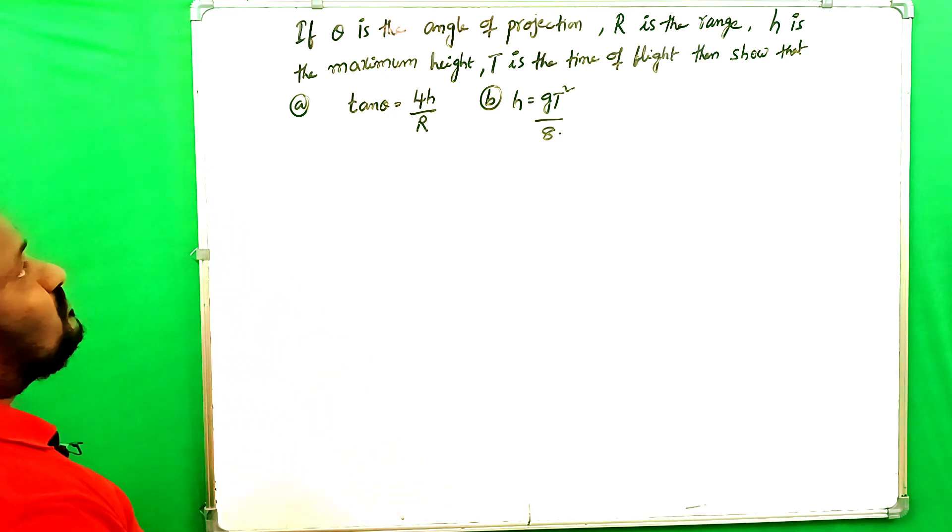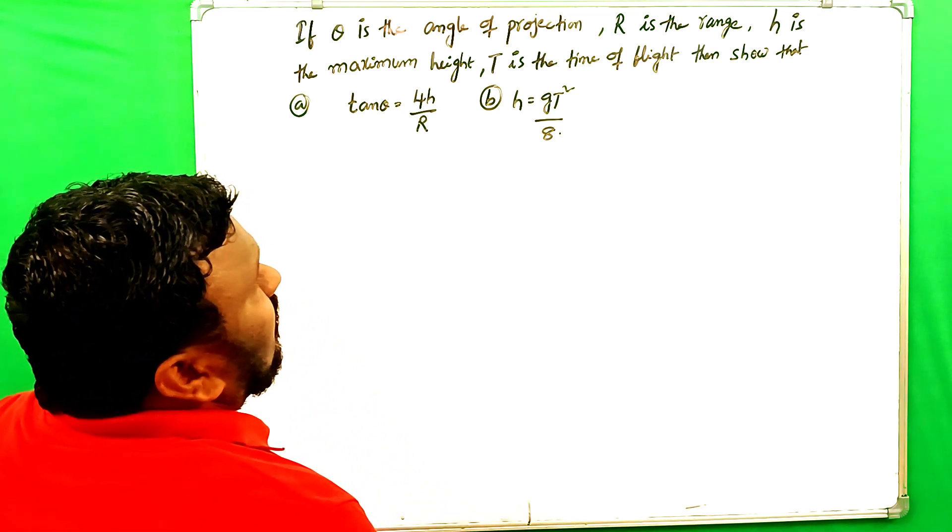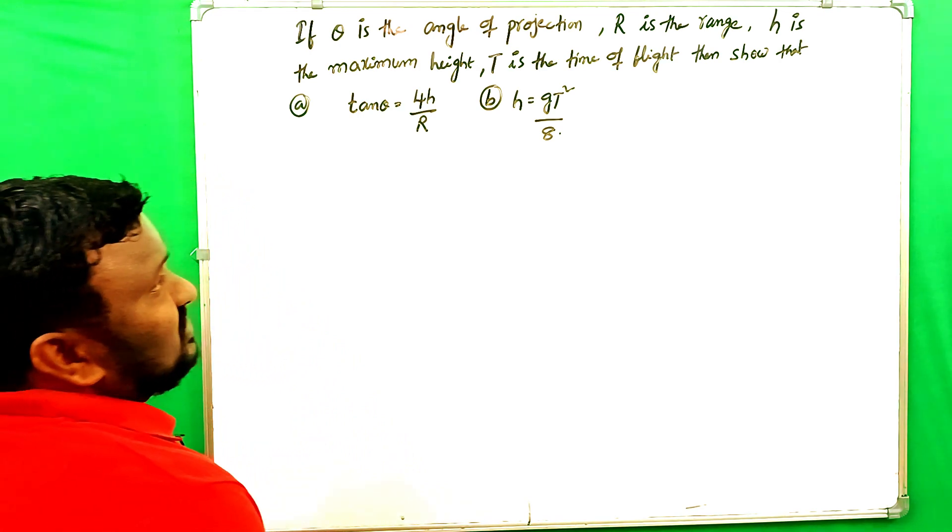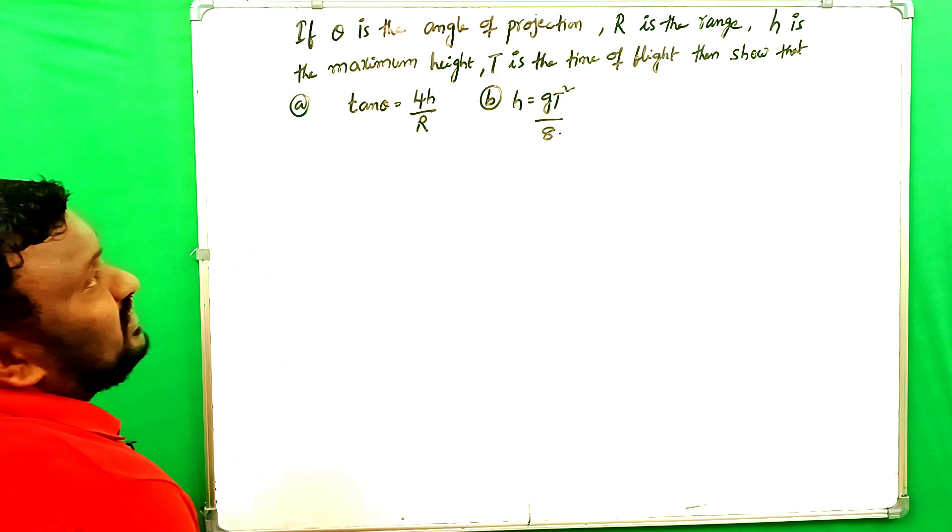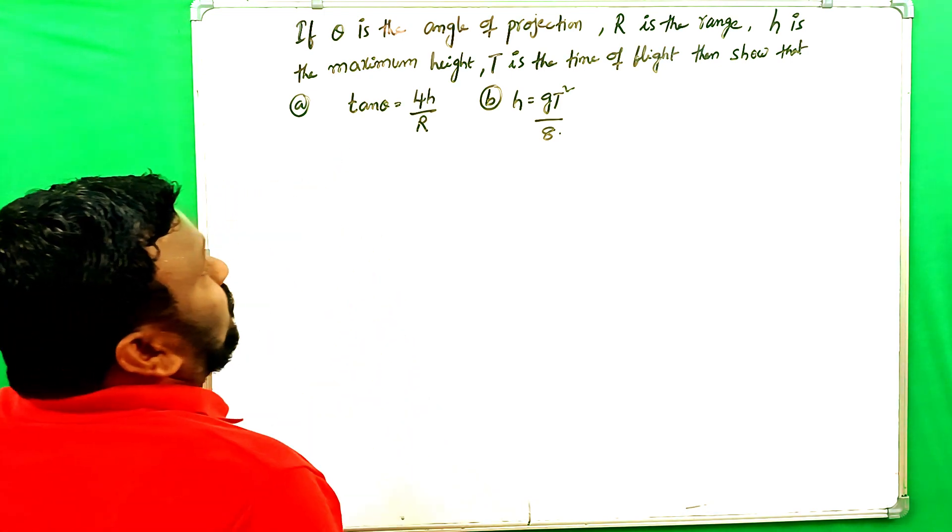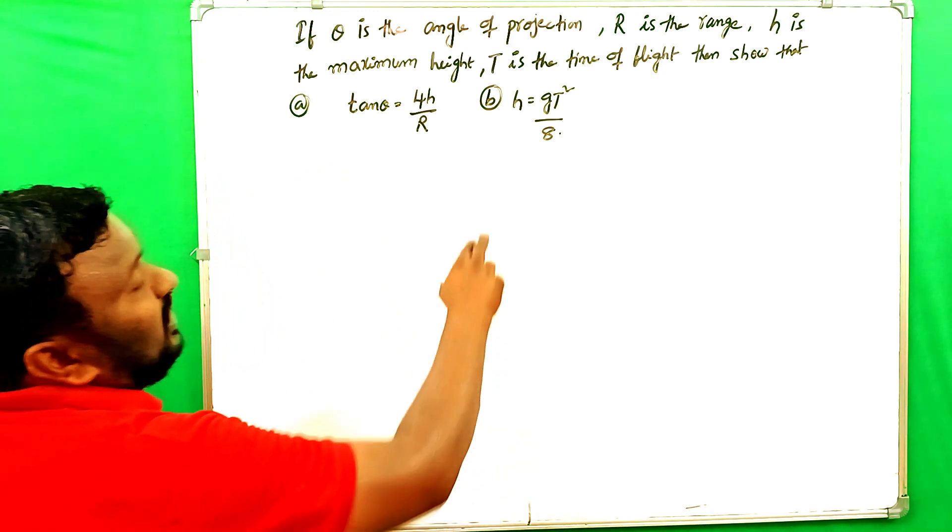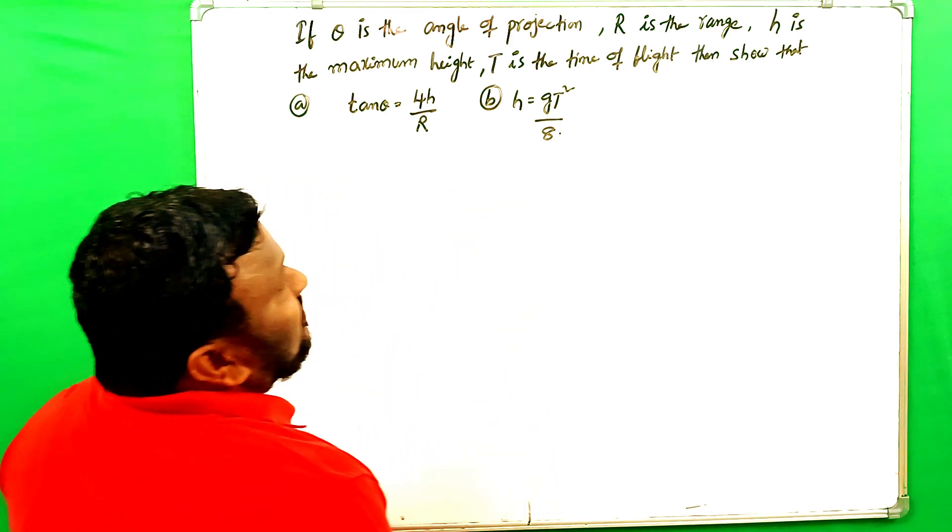The question is: if theta is the angle of projection, r is the range, h is the maximum height, and t is the time of flight, then show that tan theta is equal to 4h by r and h is equal to gt square by 8.